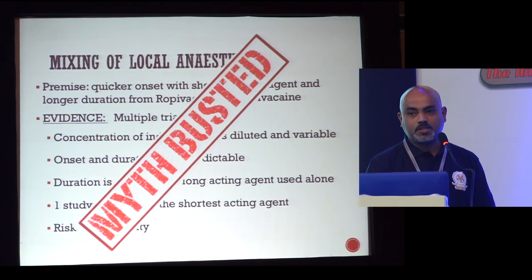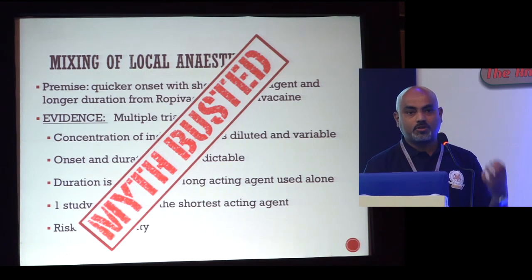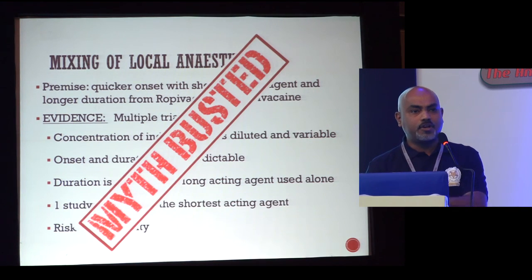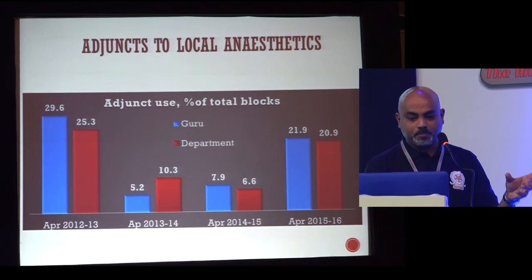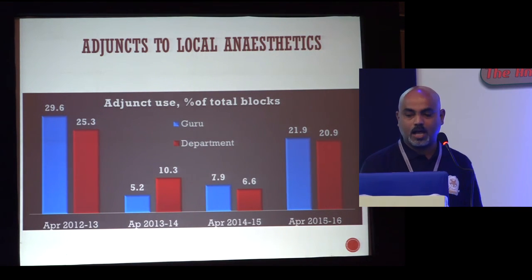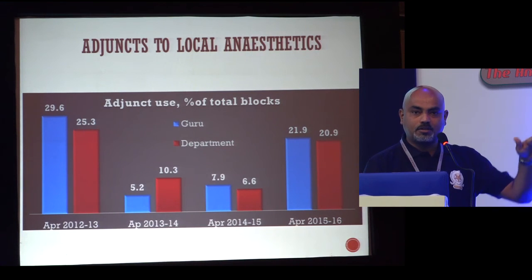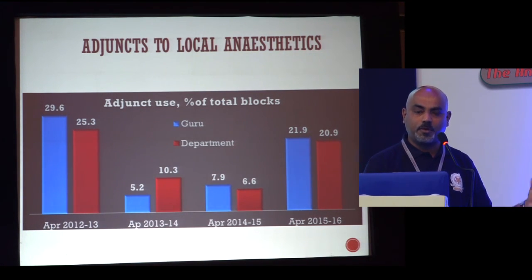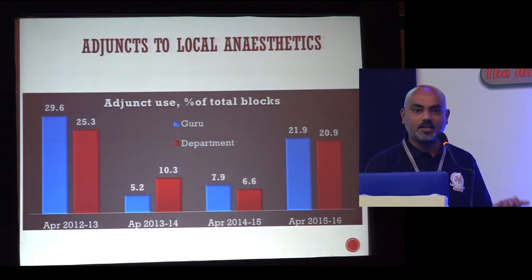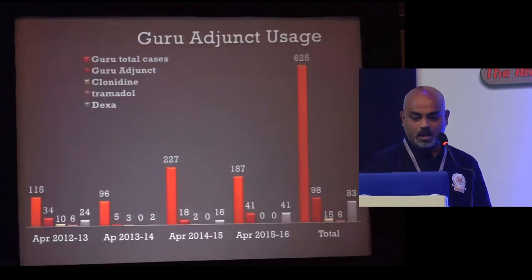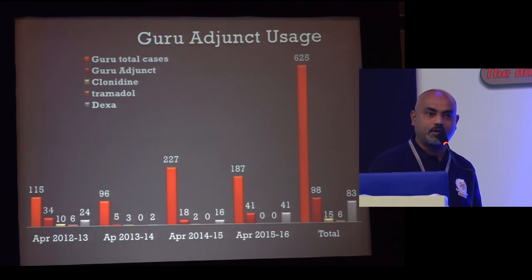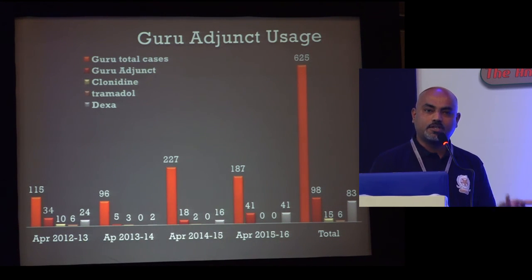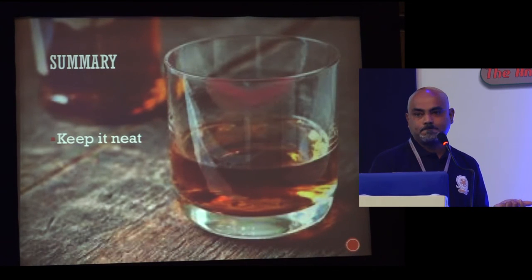The take-home message: think before you do. If you want a quick tourniquet block, do a block with short-acting only and have the surgeon infiltrate a long-acting agent to the skin — or don't mix at all, just use a long-acting agent. From my own audit, the usage of adjuvants in my practice has changed. Earlier, four out of my blocks had adjuvants. It came down with emerging evidence of lack of efficacy and risk of toxicity. I used clonidine, tramadol, and dexamethasone earlier, but currently one in four of my patients gets dexamethasone.